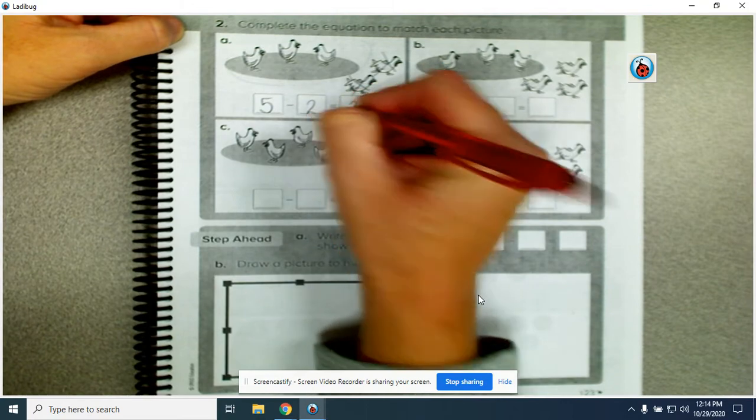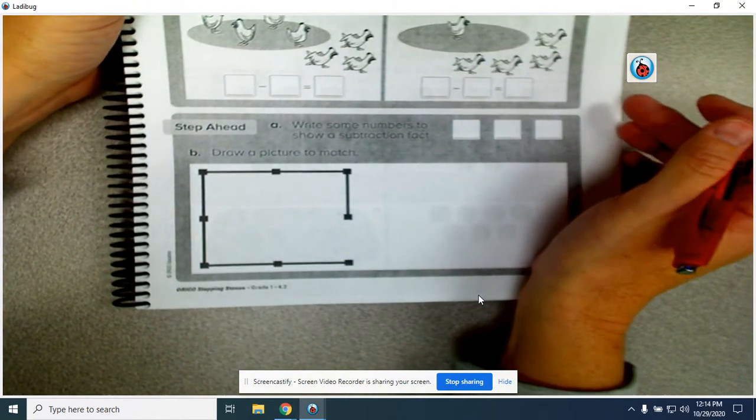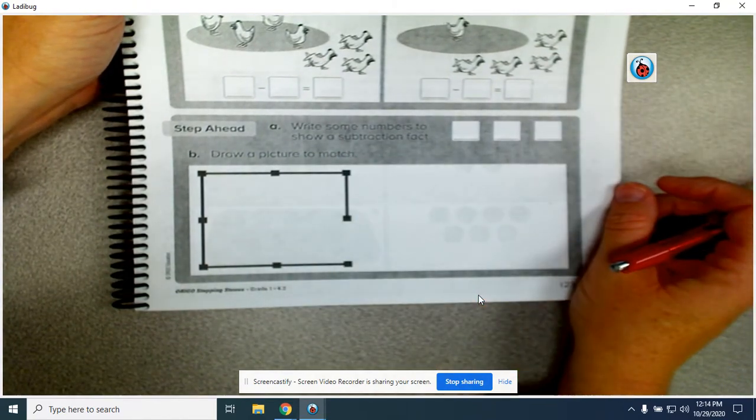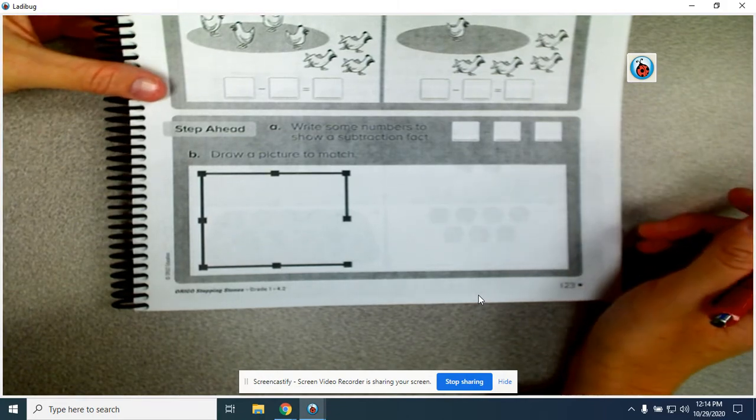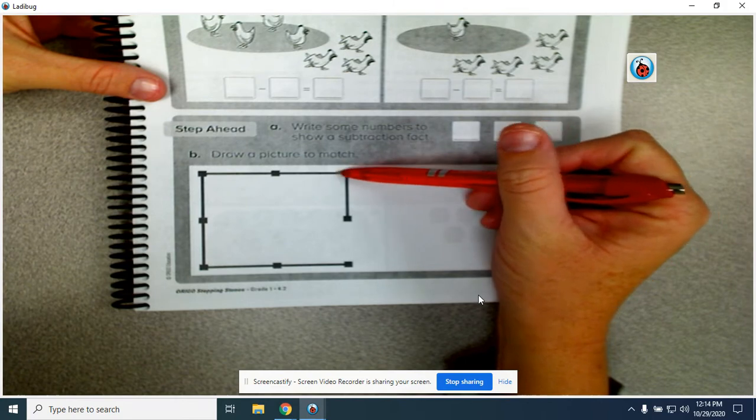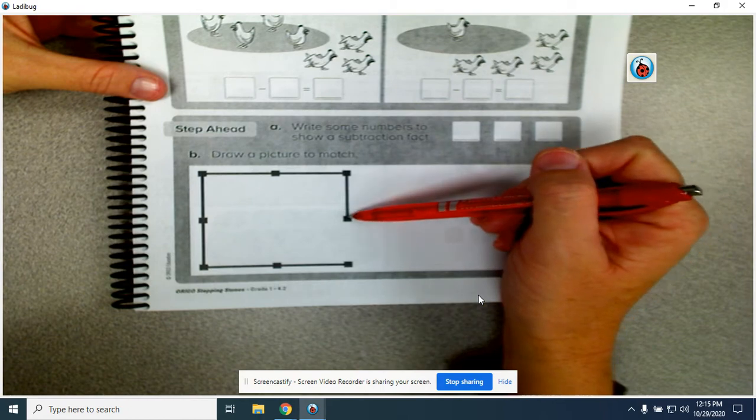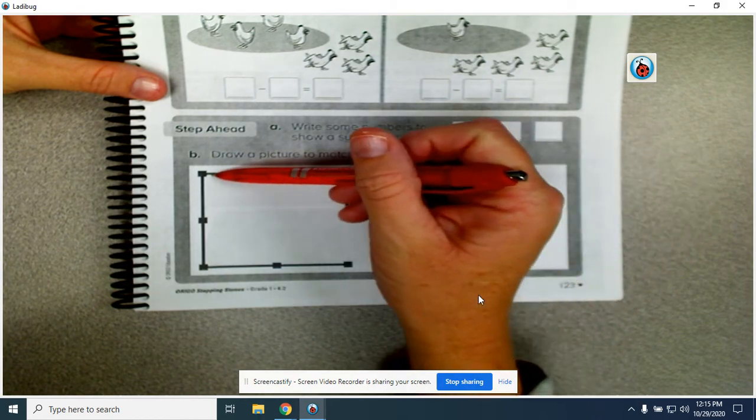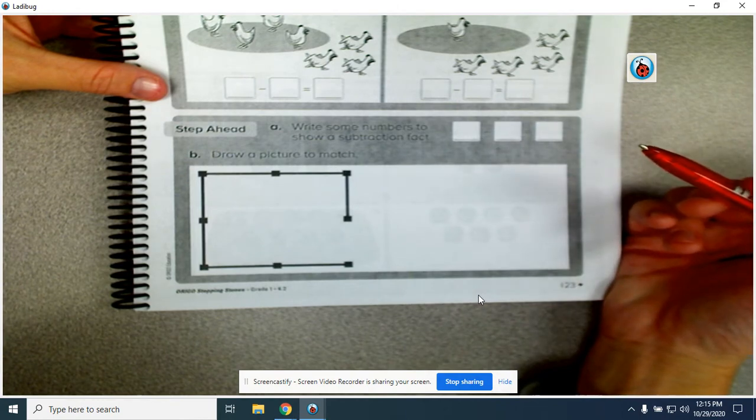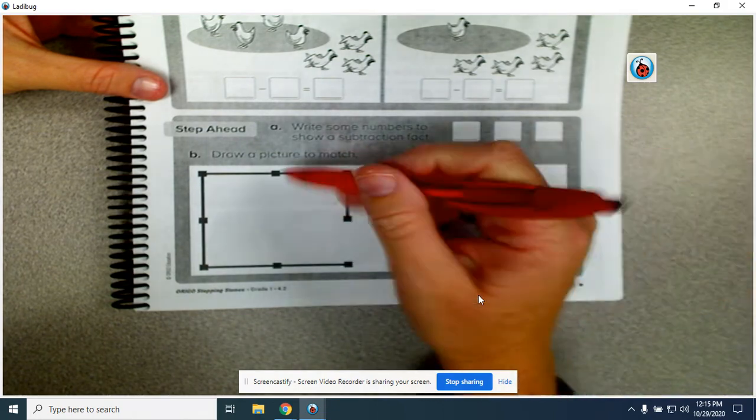You go ahead and do the other equations on your own. On the last part it says write some numbers to show a subtraction fact, draw a picture to match. So I'm thinking how many lines do we have here? We can count the lines. One, two, three, four, five, six, seven. There are seven.